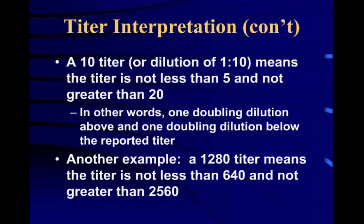What's really confusing is it's not simply a titer of 10. Because doubling dilution tests have an error of 1 dilution above and 1 dilution below, a dilution of 10 means the titer is not less than 5 and not greater than 20 — one doubling dilution above and one doubling dilution below. Another example: the titer was 1,280, which means it's somewhere between 640 and 2,560. And if they were dollars, there's certainly a difference between 640 and 2,560 — but as a titer, 1,280 is between 640 and 2,560. So that's important.